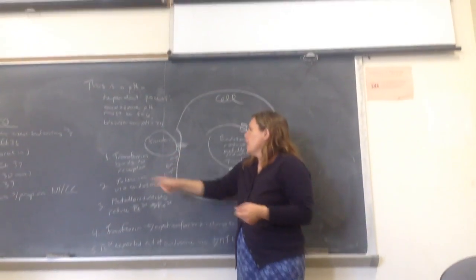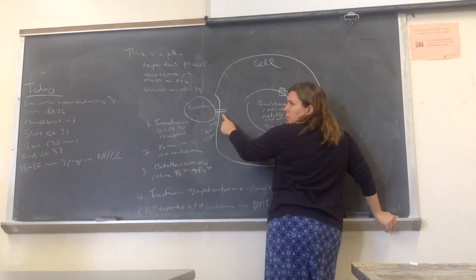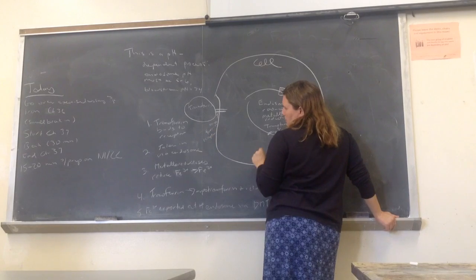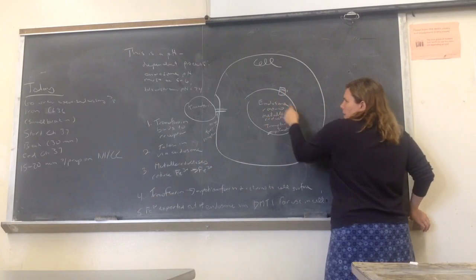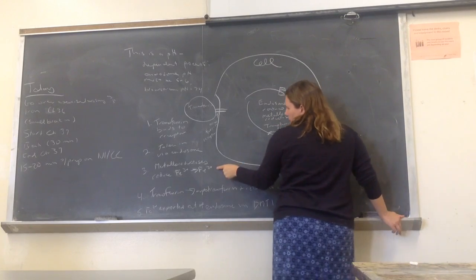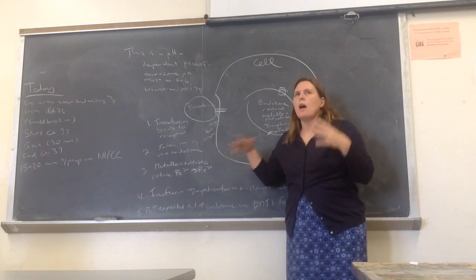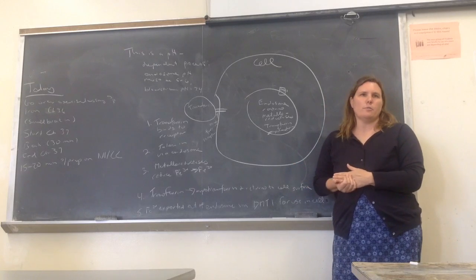Which is 7.4. So, one, transferrin binds to the receptor, and that says transferrin receptor. Two, it is taken in via an endosome, and here I made my endosome. Three, the metalloreductases reduce iron 3+ to iron 2+.